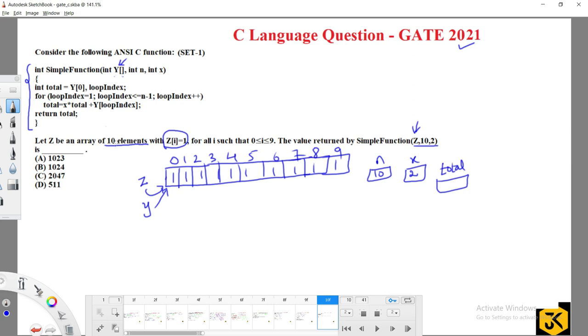Now they make the total value as y of 0. What is y of 0? y of 0 is 1. And they made loop index, so loop index they have taken one for loop. Loop index value is 1. They are trying to check for loop index is less than or equal to n minus 1. What is the value of n? 10. 10 minus 1 is 9, meaning that loop index value has to be iterated from 1 to 9.